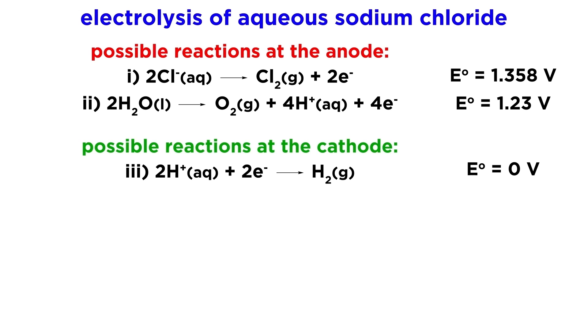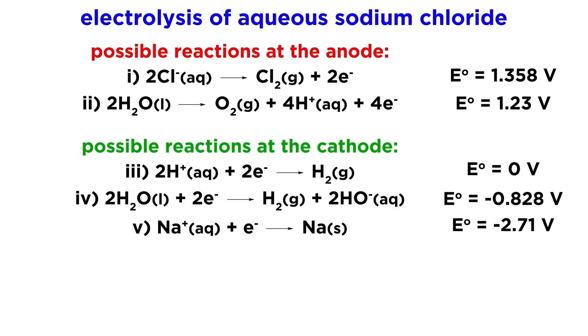Hydrogen ions could be reduced, water molecules could be reduced, or sodium ions could be reduced. Now let's talk about the likelihood of each half-reaction.